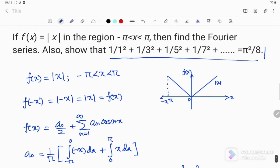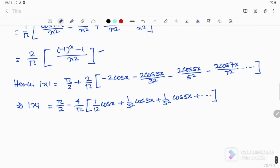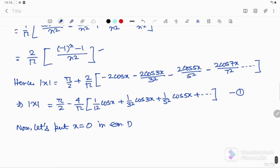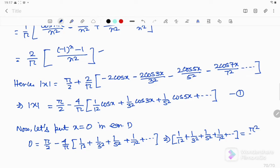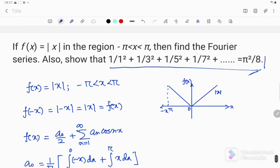Now we have to go for the second part of this problem. So we have to prove this. So let's give it equation number 1. Now let's put x equal to 0 in equation 1. So on putting x equal to 0 in equation number 1, I am getting 0 is equal to pi by 2 minus 4 by pi, and this will be 1 by 1 square because cos 0 will be 1. So 1 by 3 square plus 1 by 5 square plus 1 by 7 square and so on. On simplification, I shall get 1 by 1 square plus 1 by 3 square plus 1 by 5 square plus 1 by 7 square and so on will be equal to nothing but pi square by 8. So which we were supposed to prove in the second part of the problem.